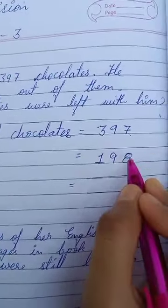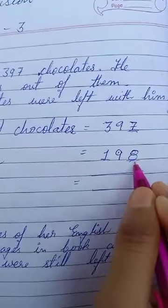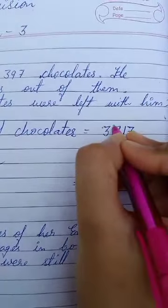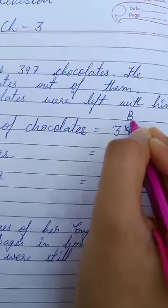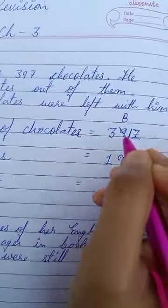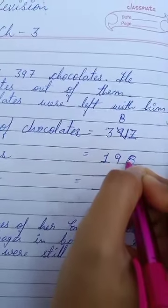Now seven minus eight, we cannot do. Not possible because seven is the smallest number compared to eight. So we'll borrow. Seventeen it becomes. Here it will be cut and become eight. We'll borrow here, one borrow, so the number becomes one less. Seventeen minus eight, you can do this with the help of your fingers, or you can do it this way by taking the smallest number.